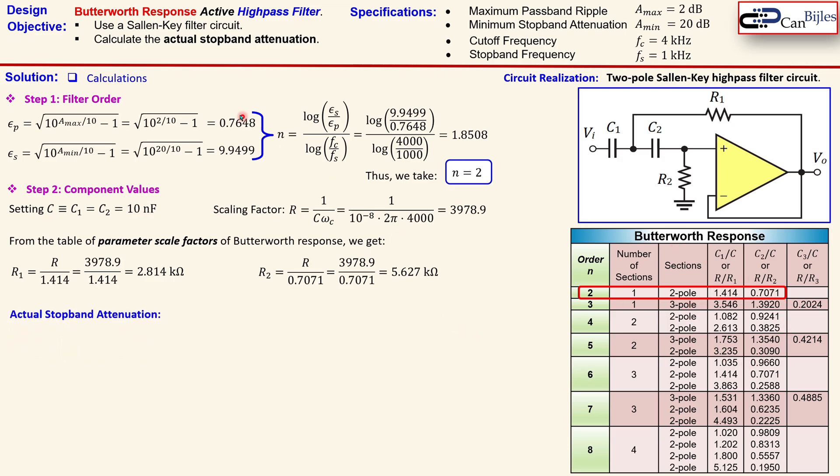Let's now calculate the next part which is the actual stopband attenuation. By the way, we are done with our design because we have calculated all the components. We have selected our circuit so we can build this circuit and then verify results. Of course we will do that shortly in the simulations.